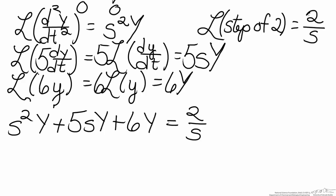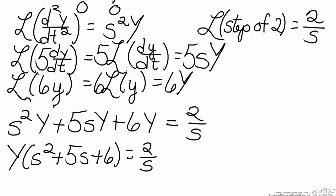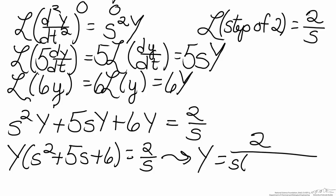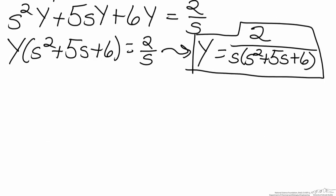Our goal is to solve for Y, so we group together the Y terms, leaving us with Y times (s-squared plus 5s plus 6) equals 2 over s. Solving for Y gives us Y equals 2 over s times (s-squared plus 5s plus 6). The next step is to break the denominator down into its roots, because we need to use a Laplace transform table for the inverse transform, and there are no table entries for s-squared plus 5s plus 6 directly. However, s-squared plus 5s plus 6 factors easily into (s plus 2)(s plus 3).